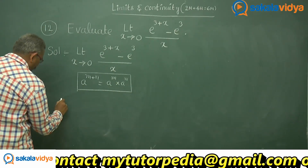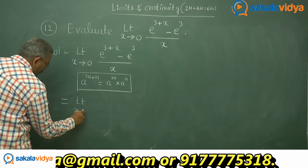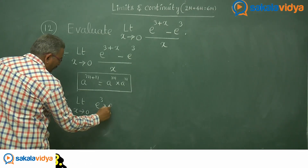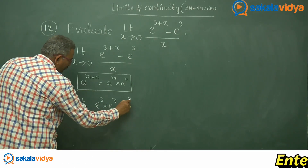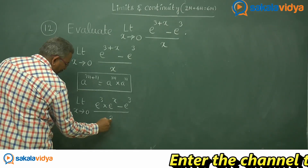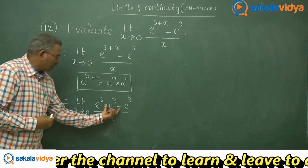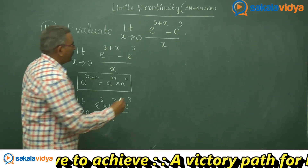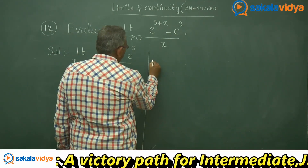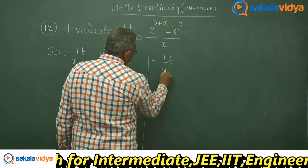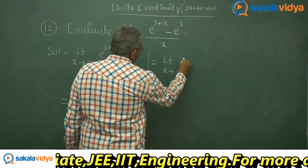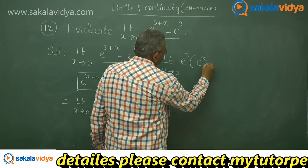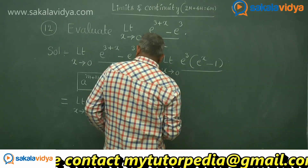Now this can be written as limit x tends to 0, e cube into e power x minus e cube upon x. From the numerator, shall we take out e cube common? Yes. Let us take e cube common. If we take e cube common, we get limit x tends to 0, e cube times e power x minus 1 upon x.